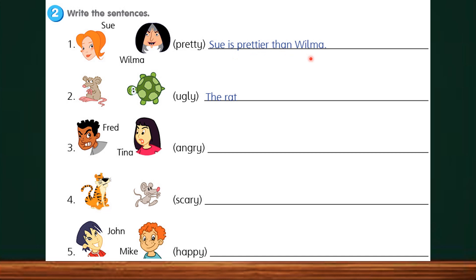Let's try question 2. This is a rat. And this is a turtle. The comparative adjective for ugly is uglier. Y has to change to IER become U-G-L-I-E-R. Uglier. The rat is uglier than the turtle.